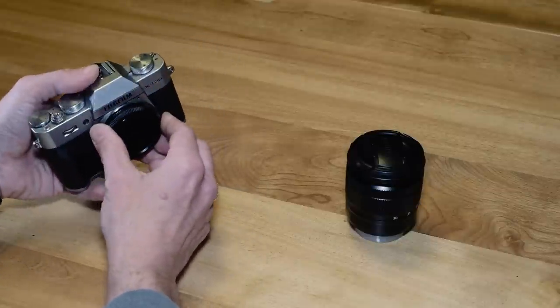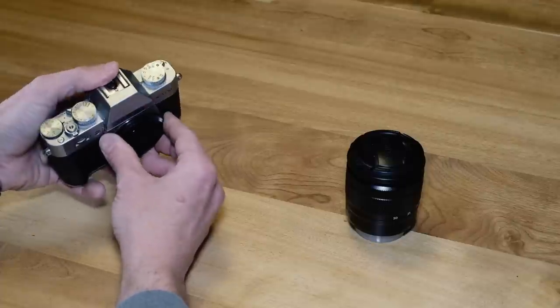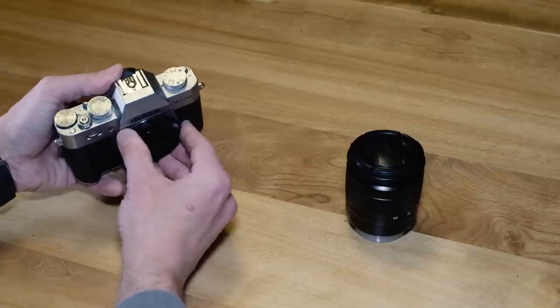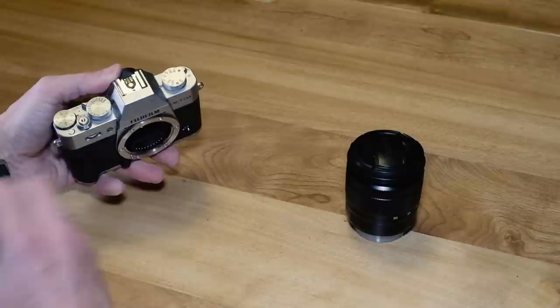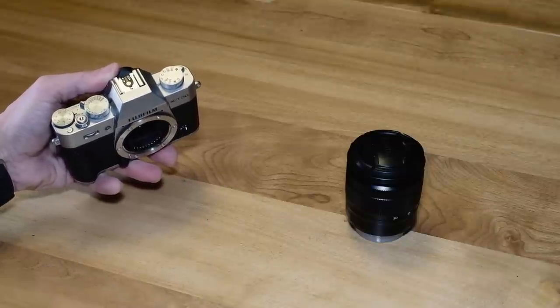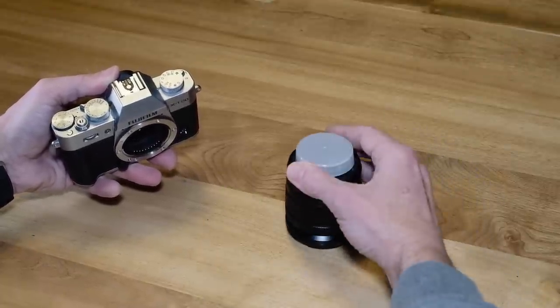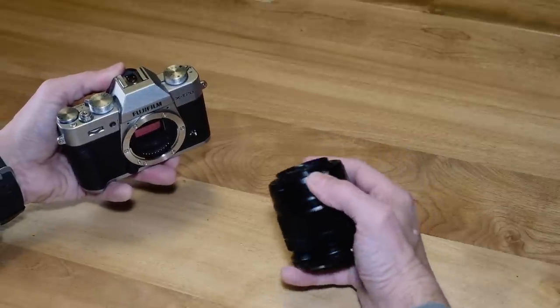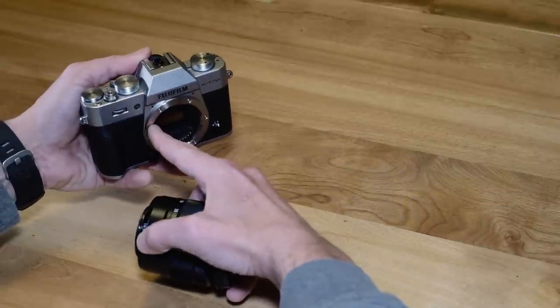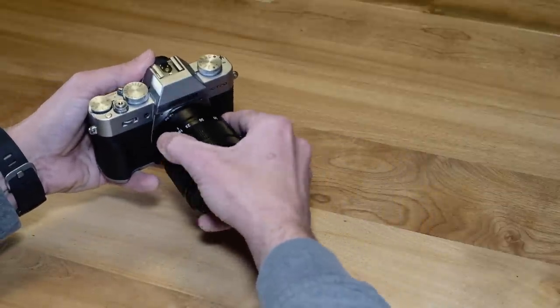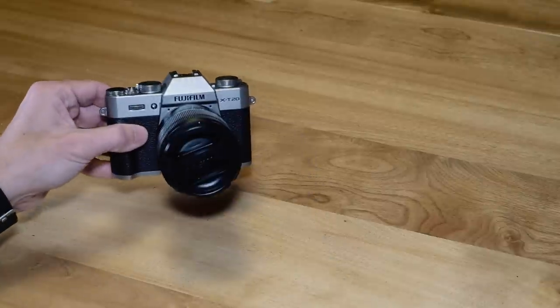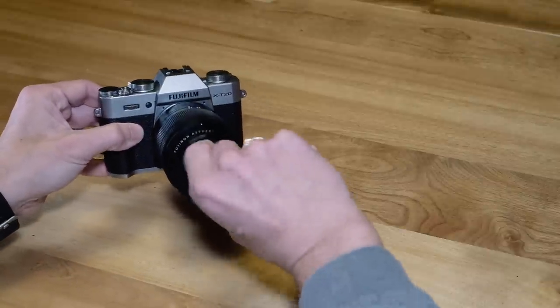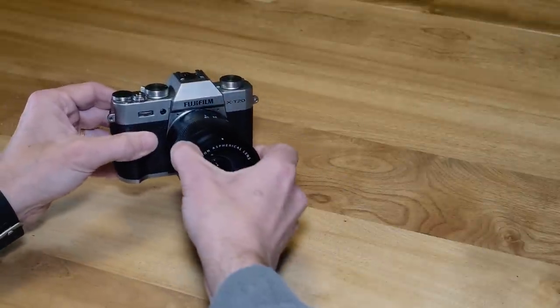Take the front body cap off. I always like to keep the camera tilted down ever so slightly. This prevents any dust from inadvertently getting in and onto the sensor. Take the rear cap off of the lens and line up the orange dot on the lens with the orange dot on the lens mount and rotate clockwise. Take the front lens cap off and I'm ready to take my first picture.